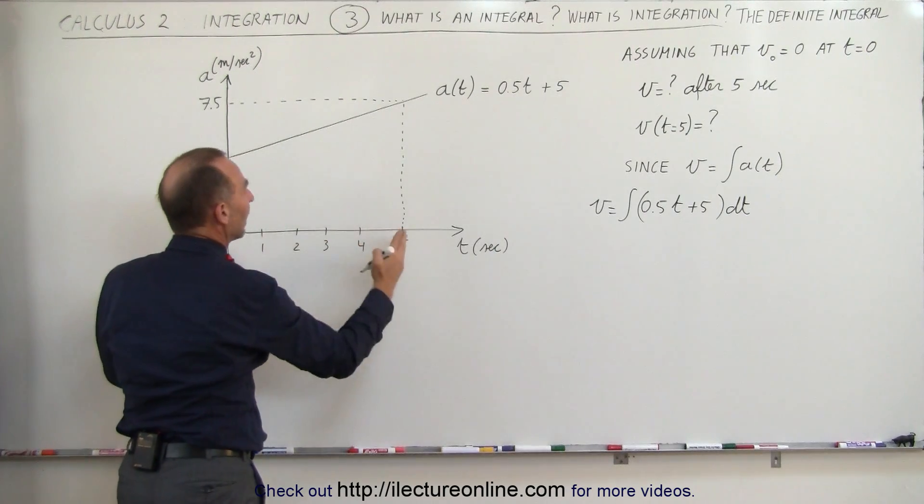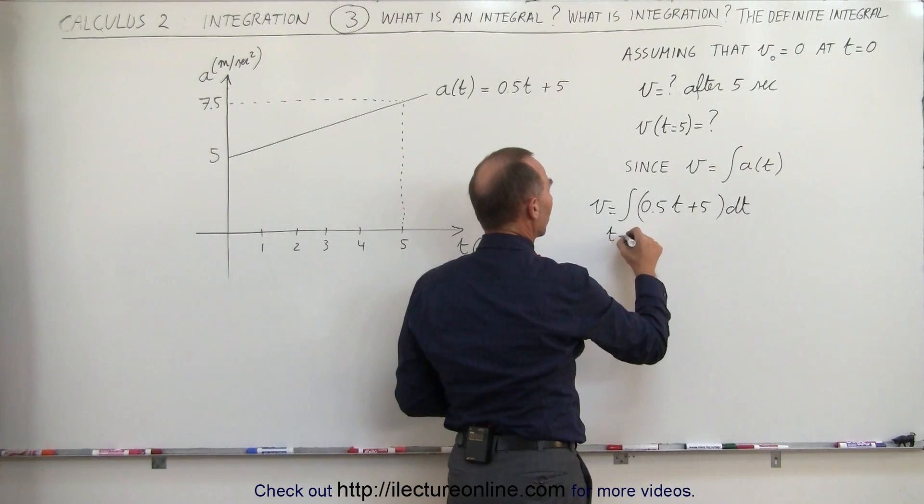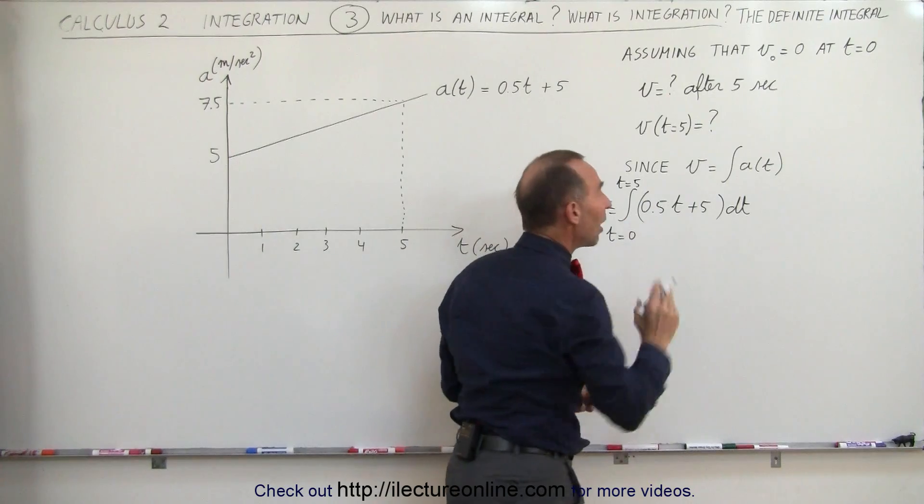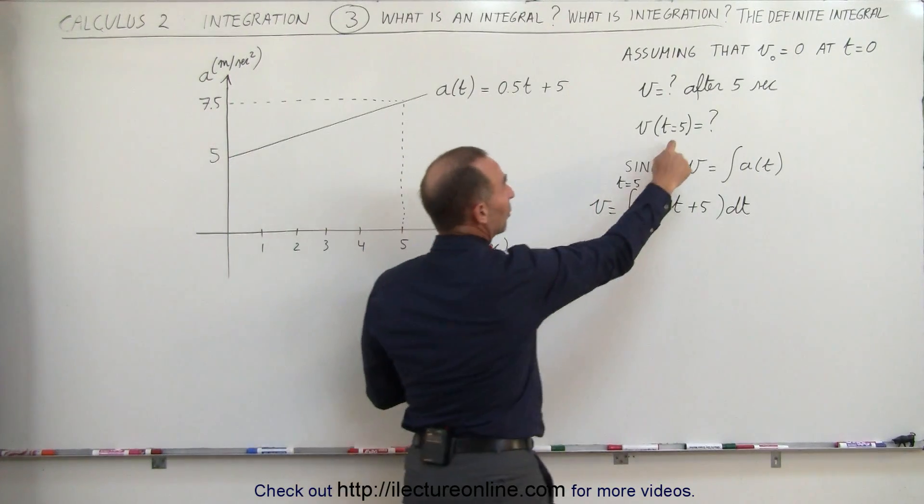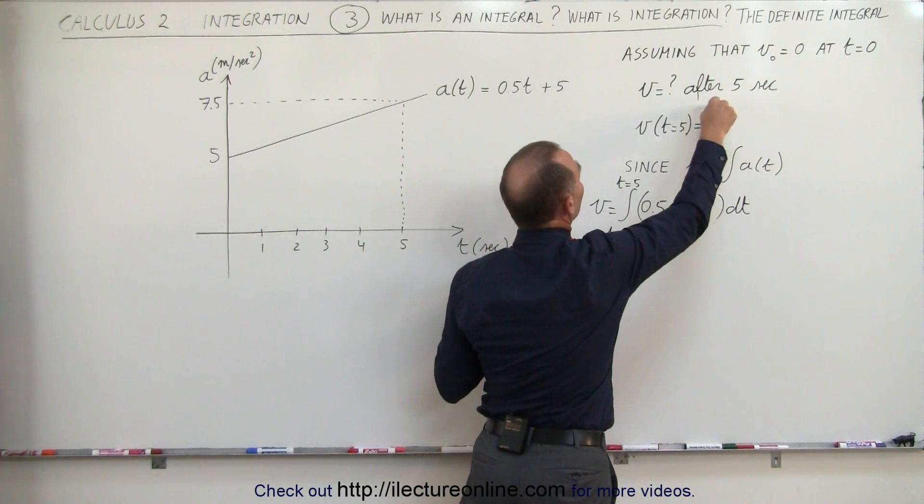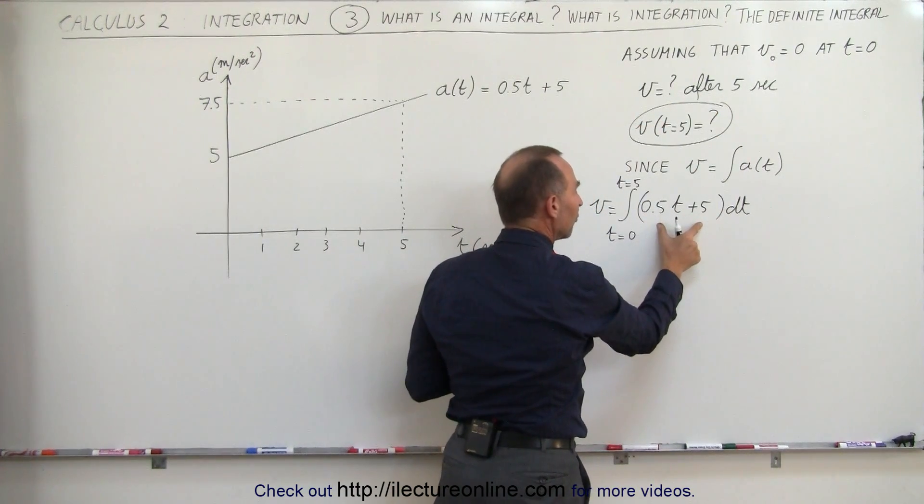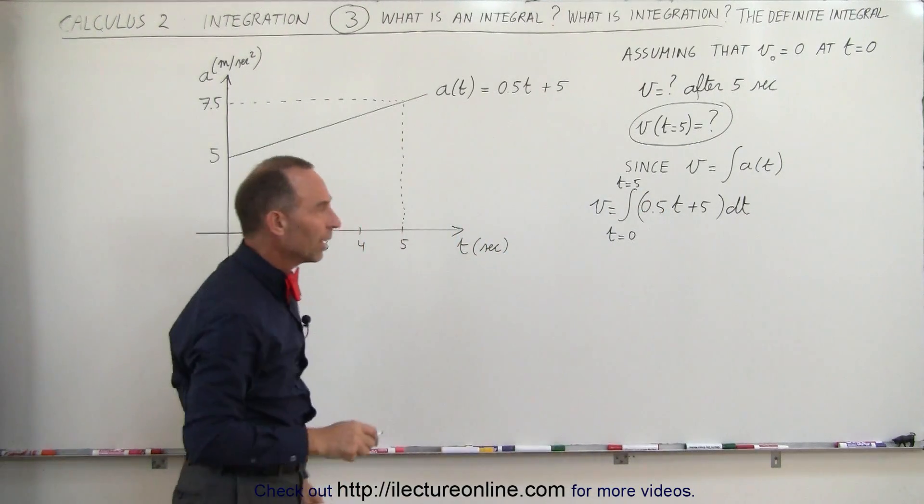We start at t equals 0, and then we end up at t is equal to 5. So the limits of our integrations, we call them, is from t equals 0 to t equals 5. That's how we can evaluate the velocity after 5 seconds. That's what we're trying to find. We're trying to find the velocity after 5 seconds. We take the integral of the acceleration function, and we evaluate it between those two values. We'll show in just a moment how to do that.